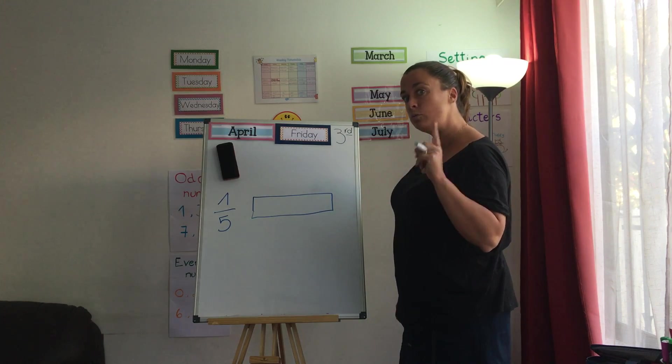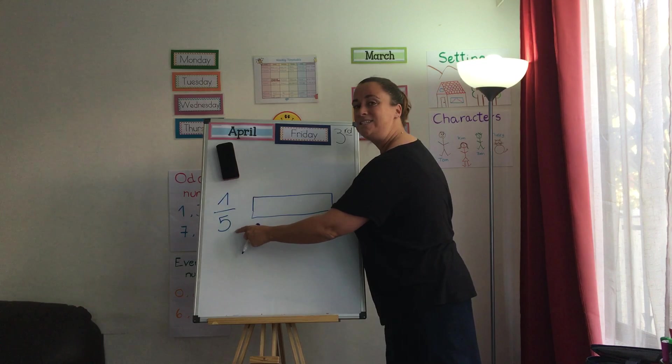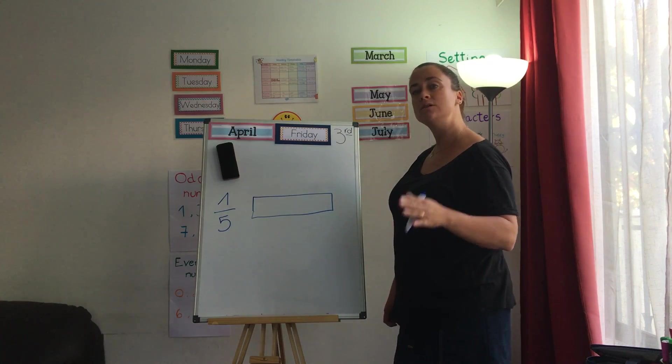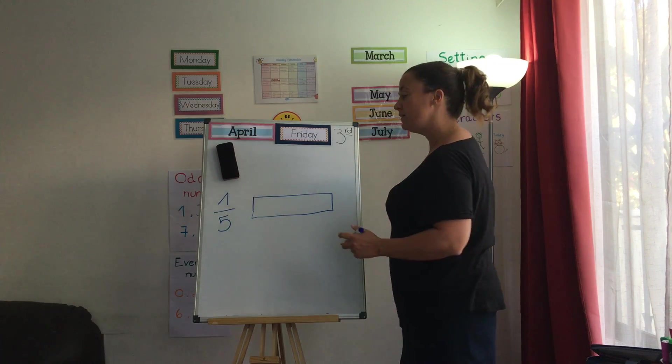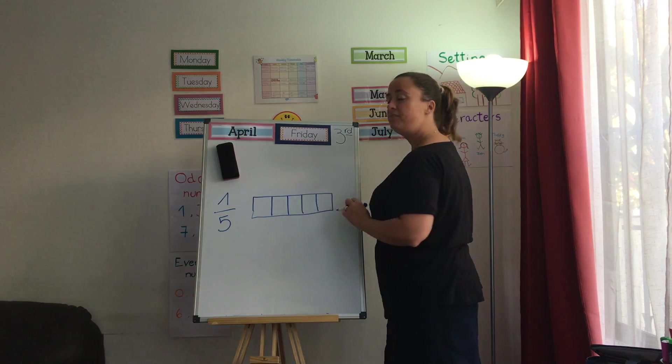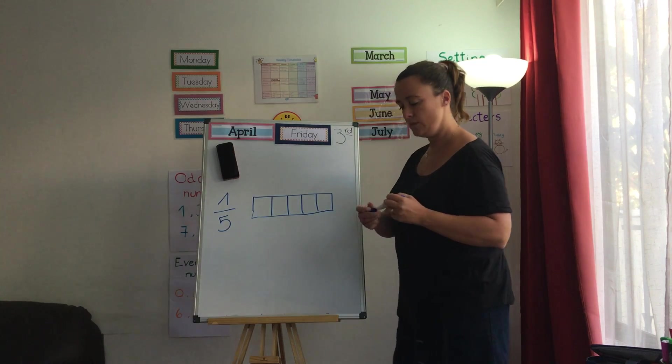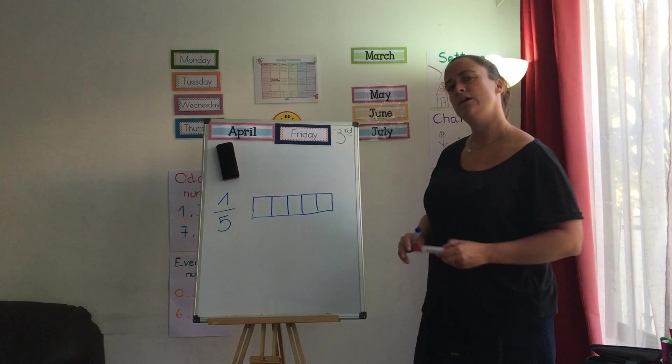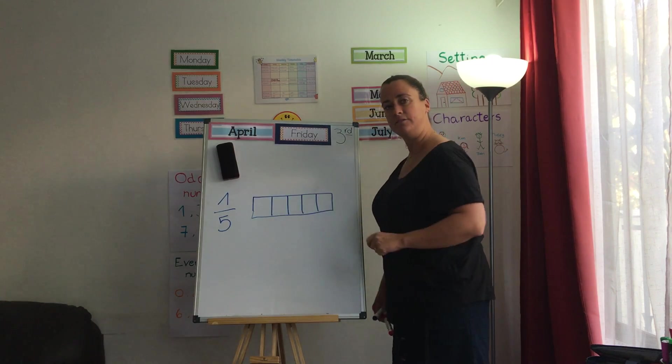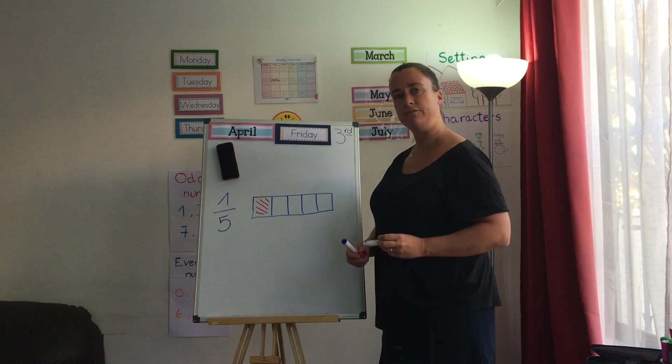How many parts does this element need to have? Which part of my fraction was the one that told me that information? Good. My denominator. My denominator tells me in how many parts the whole is divided. And this whole is divided into 5. Good. 1, 2, 3, 4, and 5. Always double check. And how many parts of a whole are they telling me? They're telling me 1 fifth. 1 out of 5. So how many do I have to colour? Good. I need to colour 1 of 5. Fantastic.